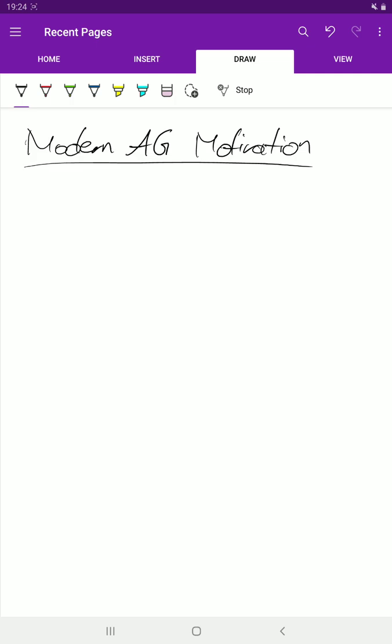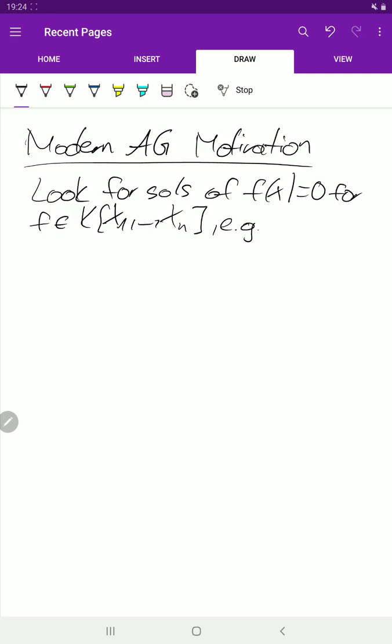Let's see the motivations. What we are interested in is solutions of f of x equal to 0 for some polynomial in several variables, let's say n. An example would be the circle. We have x squared plus y squared is equal to 1. That's, for instance, over the reals, that's just the unit circle.